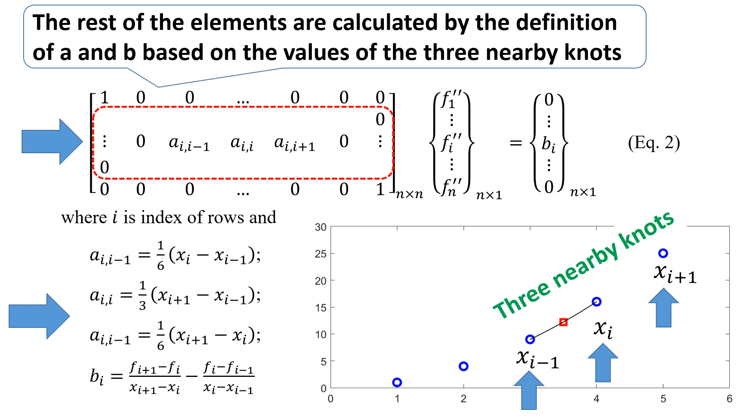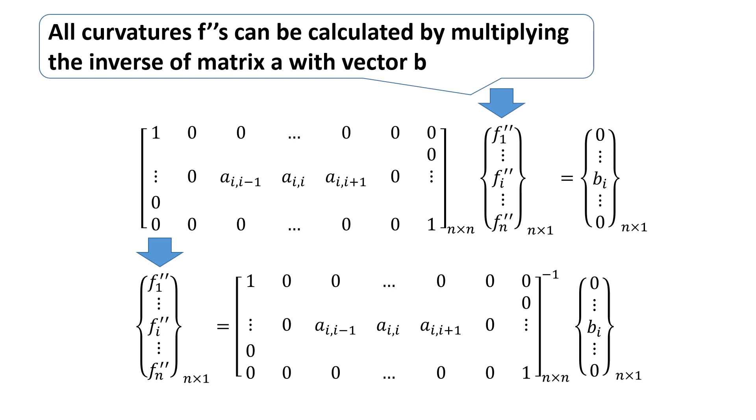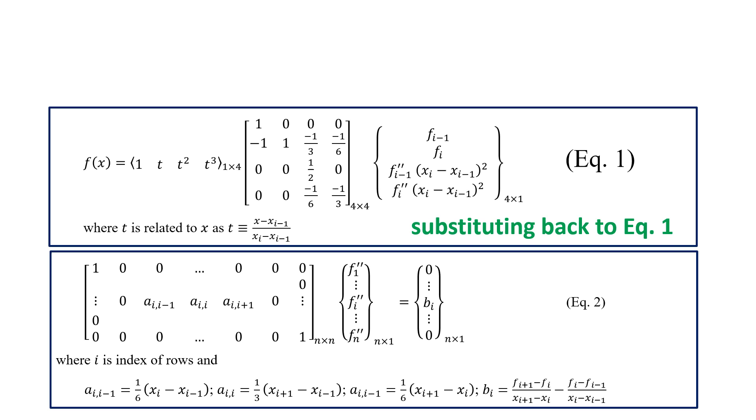All curvatures f'' can be calculated by multiplying the inverse of matrix A and vector B. By substituting the calculated f'' back to equation 1, we get the final interpolated value f at x.